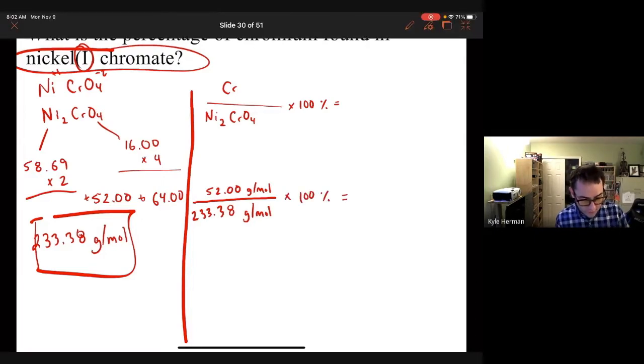Okay, so a couple things. One, we cancel out the grams per mole because they're the same on the top and the bottom. And when we plug this in the calculator, it's going to be 52 divided by 233.38 times 100. And that'll give us 22.28 percent chromium.